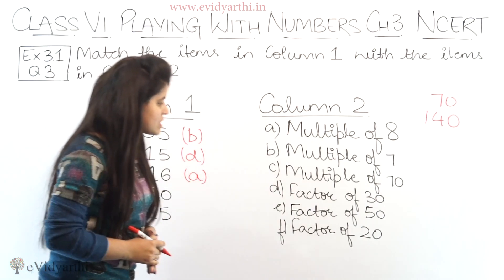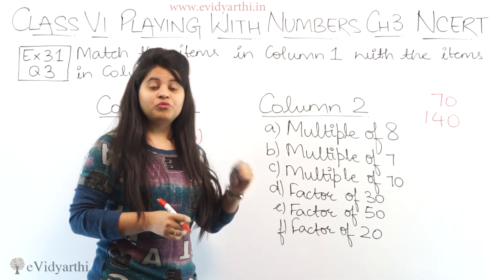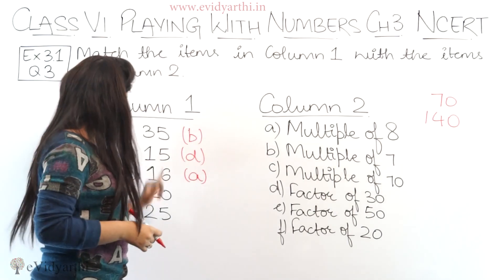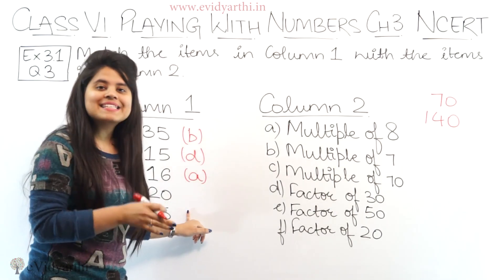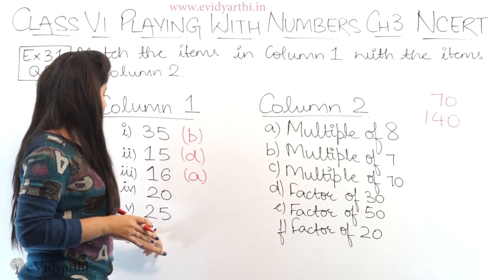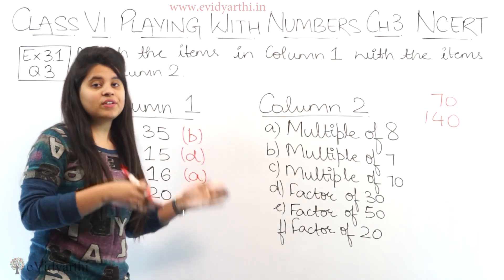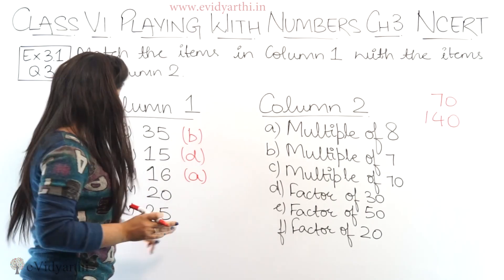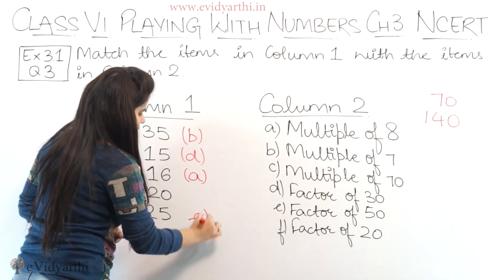Then part e, we have factor of 50. Factor of 50 means which of these two remaining numbers has 50 in its table. 25 is the number whose table has 50, because 25 into 2 is 50. So this is part e.